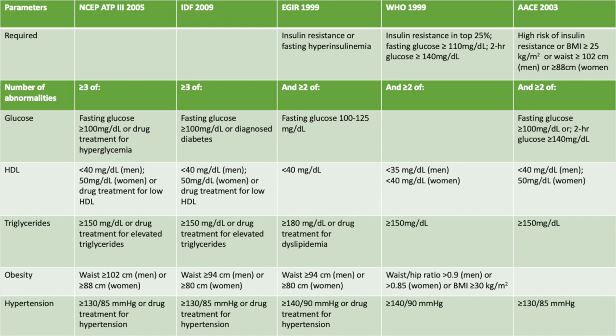For the IDF, waist circumference cutoffs are more than 94 cm for men, or more than 80 cm for women, and blood pressure more than 130 over 85 mmHg, or drug treatment for hypertension.